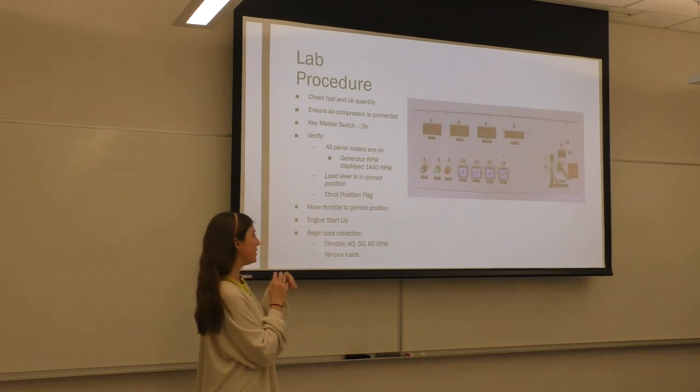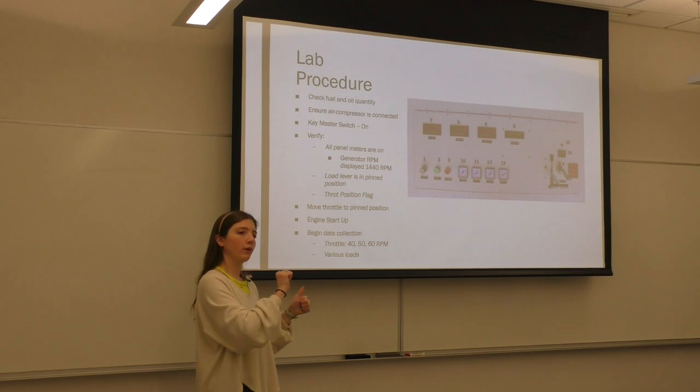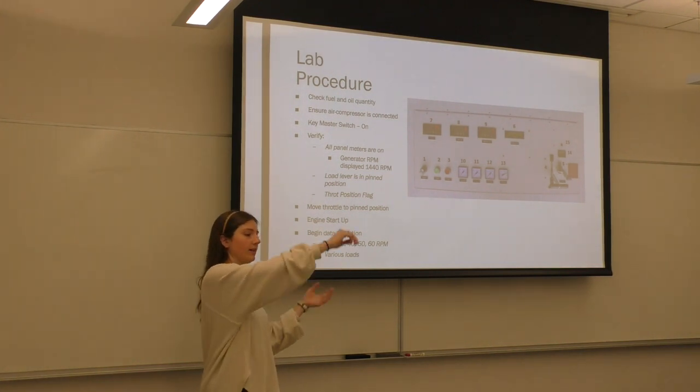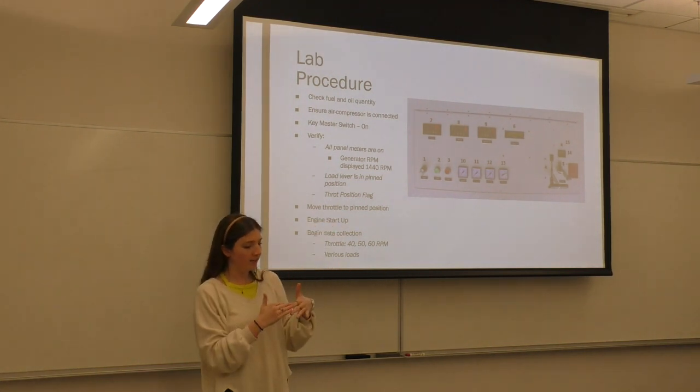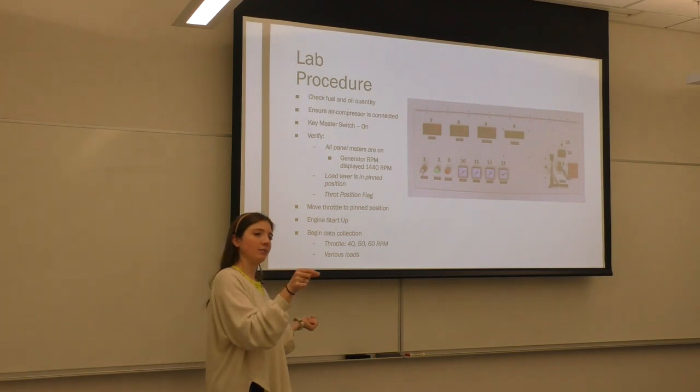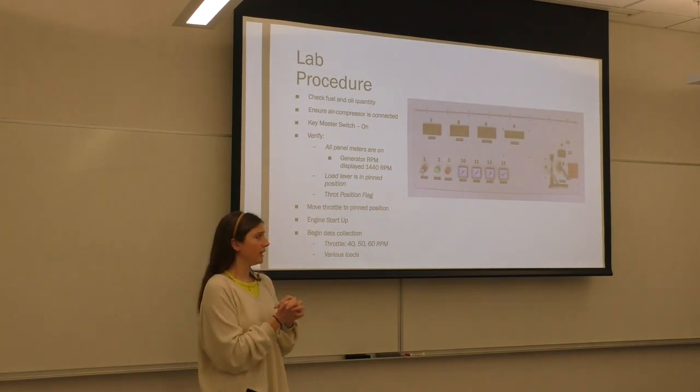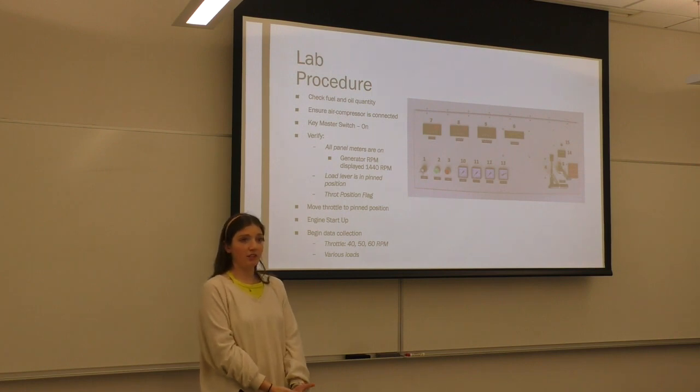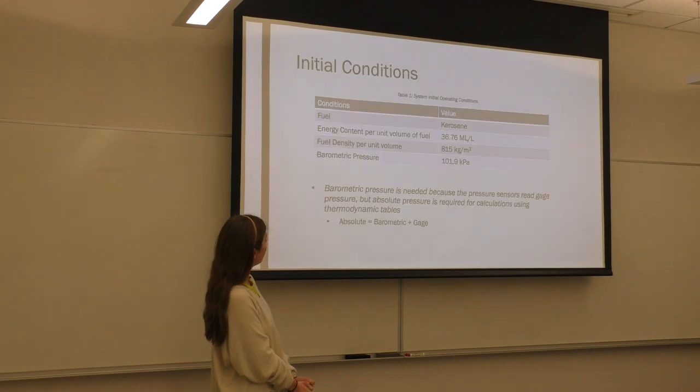And we changed the throttle from 40 to 50 to 60 RPM. And then we kind of brought it back down. And then we increased some loads. It was honestly really, the whole process is pretty confusing. I just followed Richard's hand movements. And that was that.